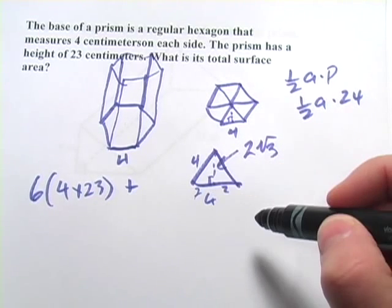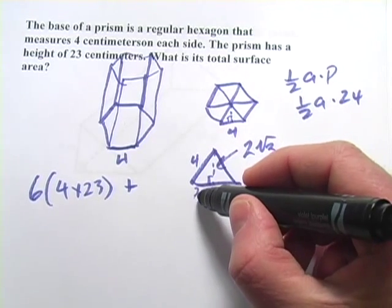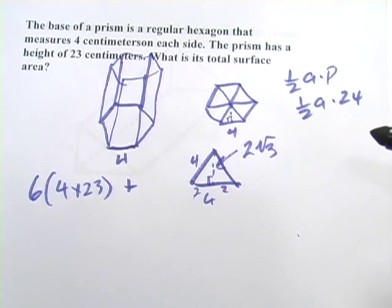Now if you're not sure how I got the 2 times the square root of 3, you can use the Pythagorean theorem here. Just plug in 2 squared plus b squared equals 4 squared. You'll find out this is 2 times the square root of 3.